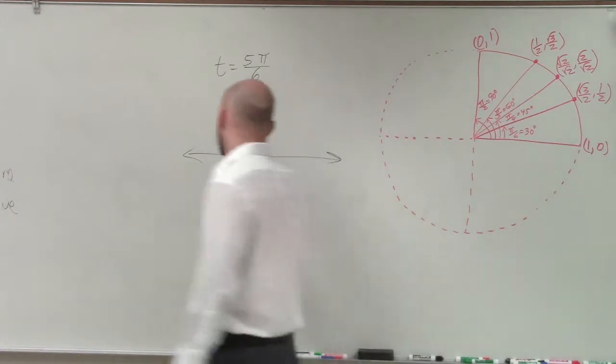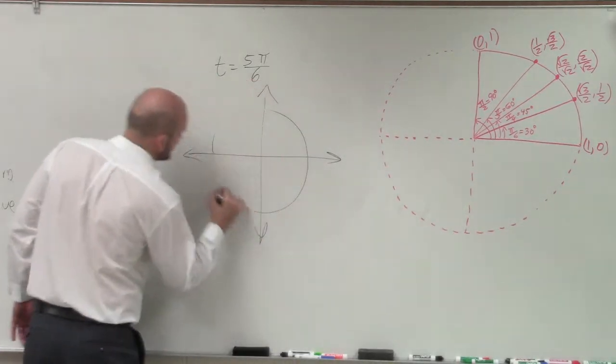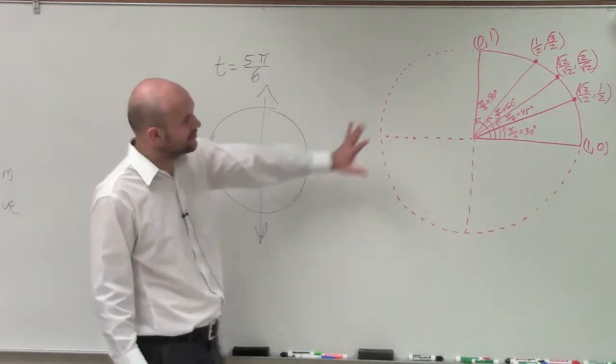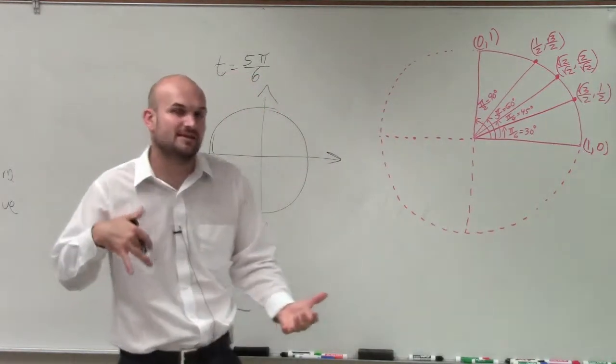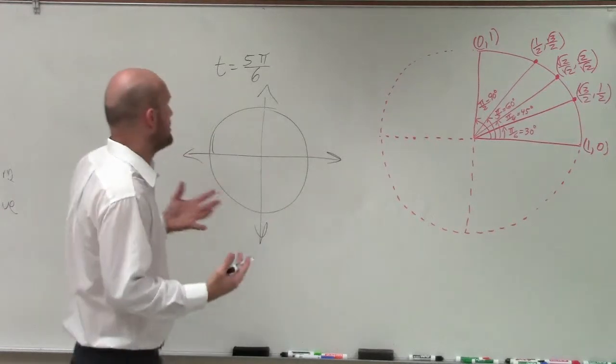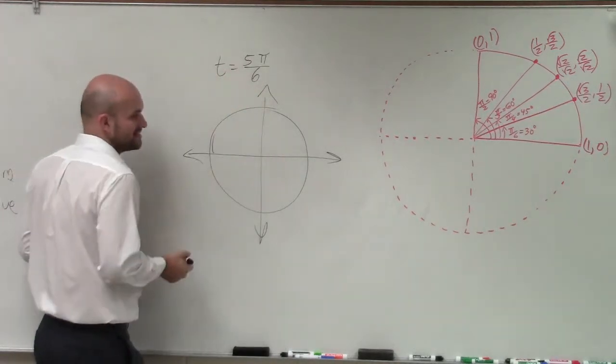So I have 5 pi over 6. So we're taking a look at the point that's going to be on the unit circle. And I have a nice little unit circle here. I show you the points in the first quadrant, and we're just going to use that first quadrant to help us find the points in the other quadrants, which we'll be able to see in a second it is.